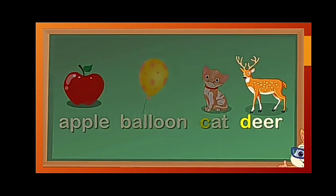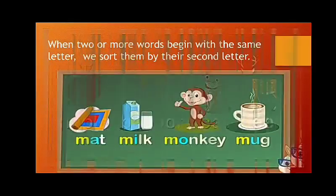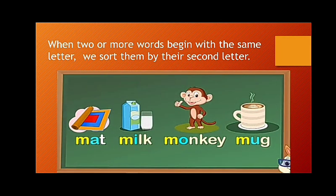Let us see the next part. When two or more words begin with the same letter, we sort them by their second letter. In these words, you can see all the words start with the same letter M. So we are going to see the second letter and we have arranged them in their alphabetical order.